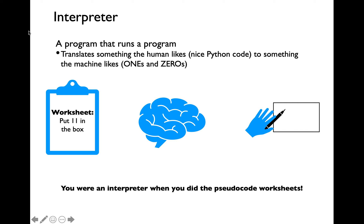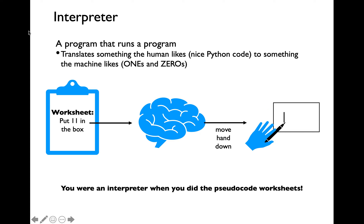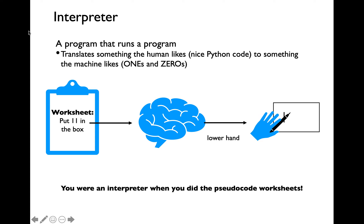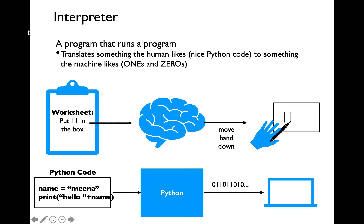Let's consider this direction which was included as part of the previous lecture worksheet, which said 'put 11 in the box.' When your brain receives such an instruction, it will take that and convert it into a series of detailed steps. For example, move the hand down, lift your hand, move the hand up to right and lower your hand, move the hand down in order to write the number 11 inside the box. Python interpreter works in a similar way. It will take your Python code, which is in a textual format, and convert it into machine-readable zeros and ones.